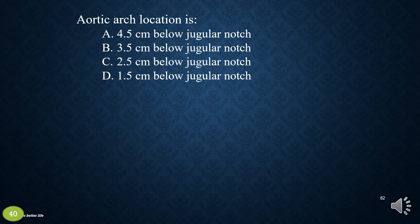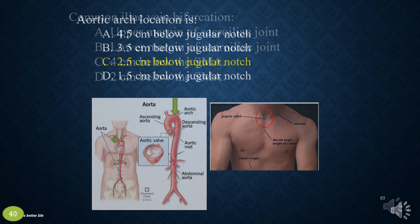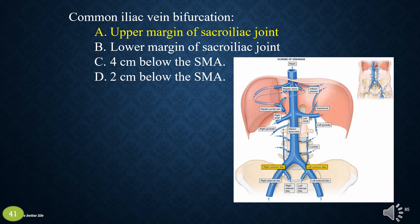Aortic arch location: is it 4.5 cm, 3.5 cm, 2.5 cm, or 1.5 cm below the jugular notch? Common iliac vein bifurcation: a. Upper margin of sacroiliac joint, b. Lower margin of sacroiliac joint, c. Circa 4 cm below the SMA, or d. 2 cm below the SMA. The answer is a, upper margin of the sacroiliac joint.